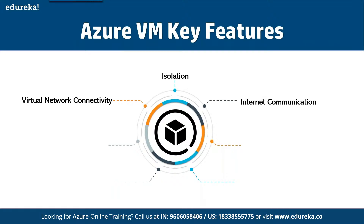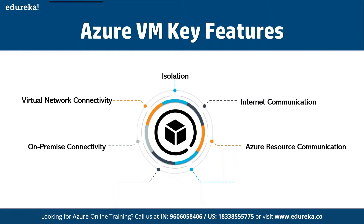The third feature is VNet — virtual network connectivity — where you can create different virtual networks and virtual network interface cards. It also supports on-premise connectivity, meaning you can connect your cloud virtual machine to your local side. Next is Azure resource communications — connectivity between different resource groups and subscriptions. There is also routing: you can define custom routes and customized routing. And finally, traffic filtering, which acts as a firewall where you can create inbound and outbound rules.